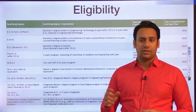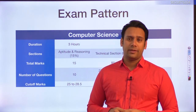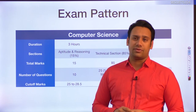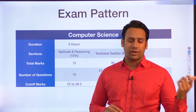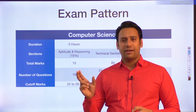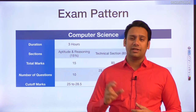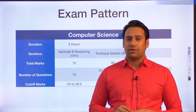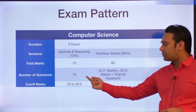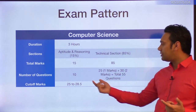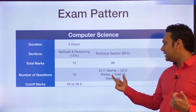For GATE computer science, the exam is approximately 3 hours long and the total marks is 100. In those 100 marks, the first 15% — that is 15 marks — is reserved for aptitude and reasoning, and the remaining 85% — 85 marks — is for your technical discipline. The weightage of the technical discipline is much higher compared to the non-technical portion.